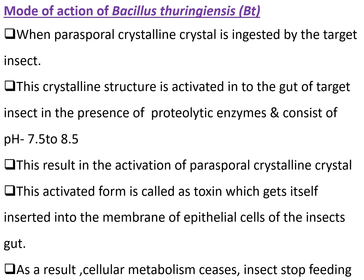This is the mode of action of Bacillus thuringiensis. The parasporal crystalline protein is ingested by the target insects, and this crystalline structure is activated in the gut of the target insect in the presence of proteolytic enzymes at a pH of 7–9.25. This results in the activation of the parasporal crystal. After activation, the toxin inserts itself into the membrane of epithelial cells of the insect's gut. As a result, cellular metabolism ceases and the insect stops feeding and dies.